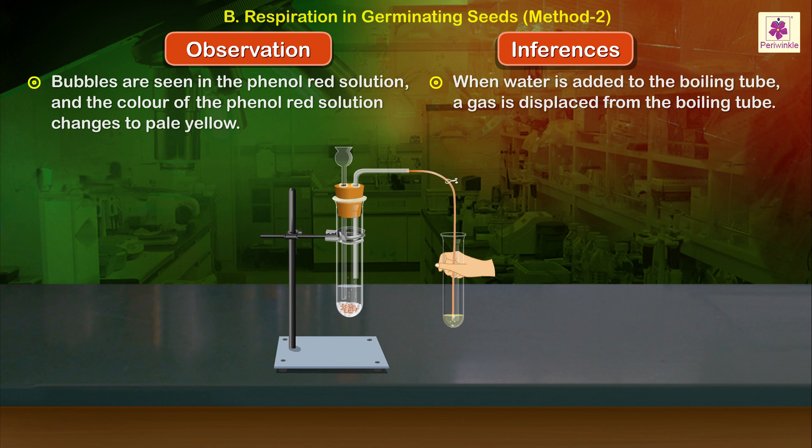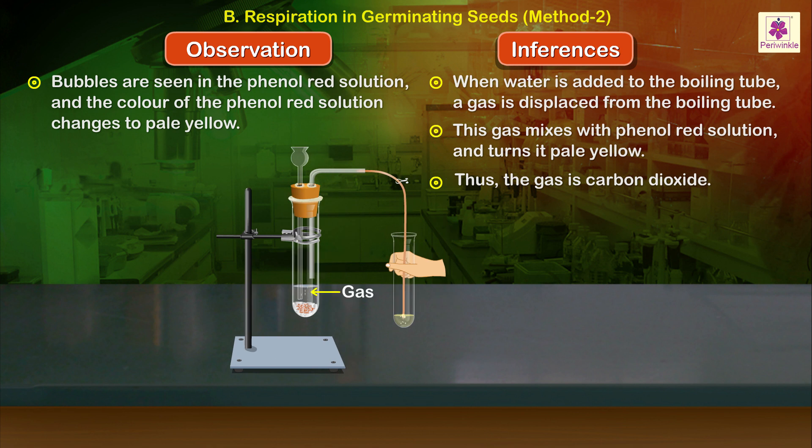When water is added to the boiling tube, a gas is displaced from the boiling tube. This gas mixes with phenol red solution and turns it pale yellow. Thus the gas is carbon dioxide.